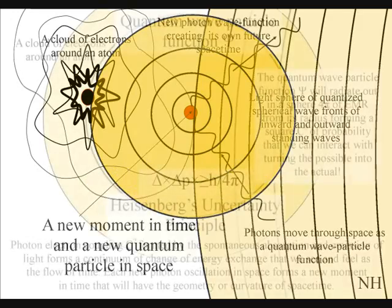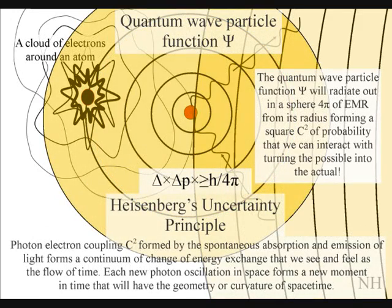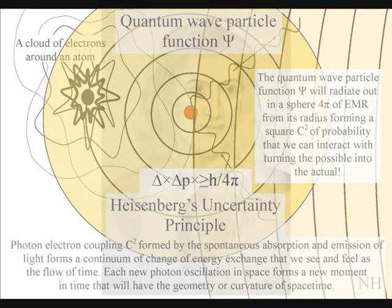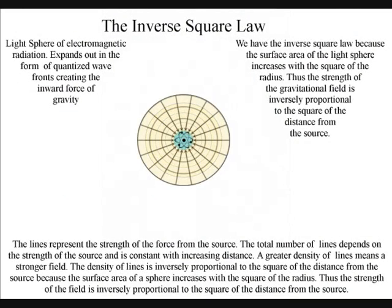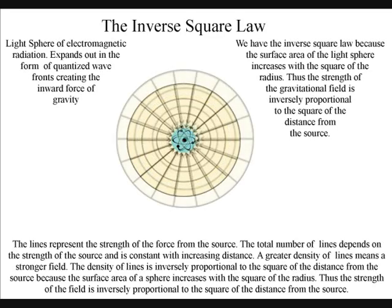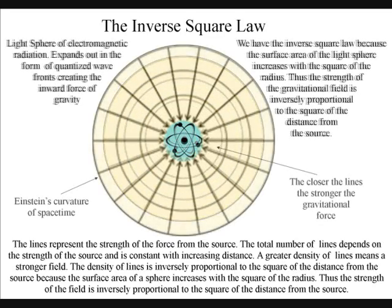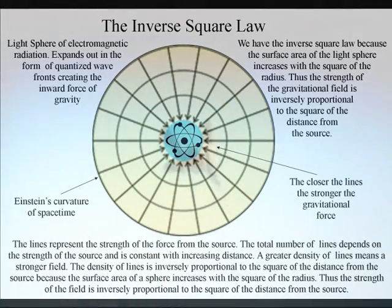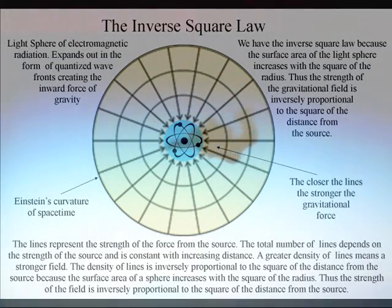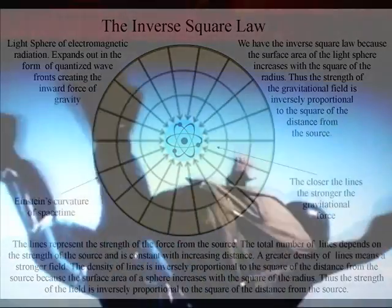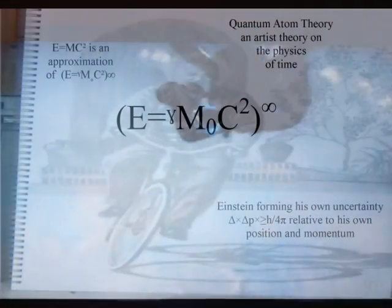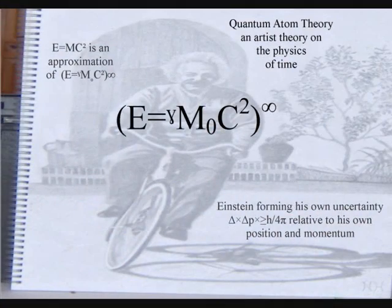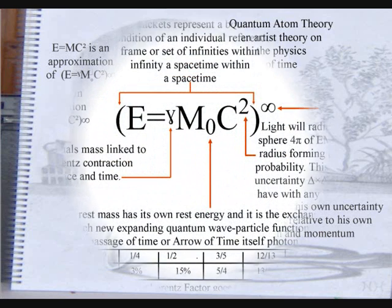We have one universal process that begins with the quantum wave particle function, or probability function of quantum mechanics, expanding out as an inverse sphere, and ends with the inverse square law of gravity and Newton's third law of motion: to every action there is an equal and opposite reaction. Gravity is the opposite reaction to atoms radiating quasi-spherical wavefronts of electromagnetic radiation. So far in this video, this theory has been explained using the mathematics that we already have.